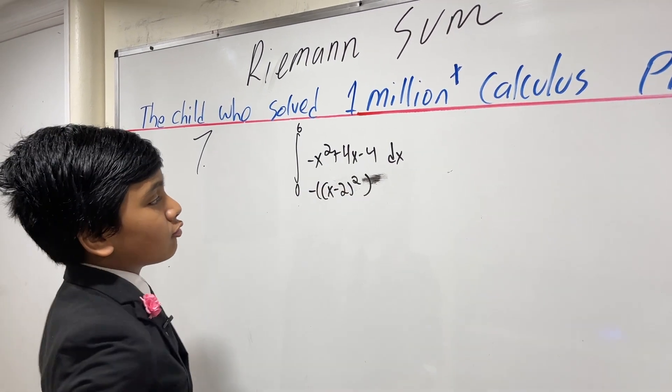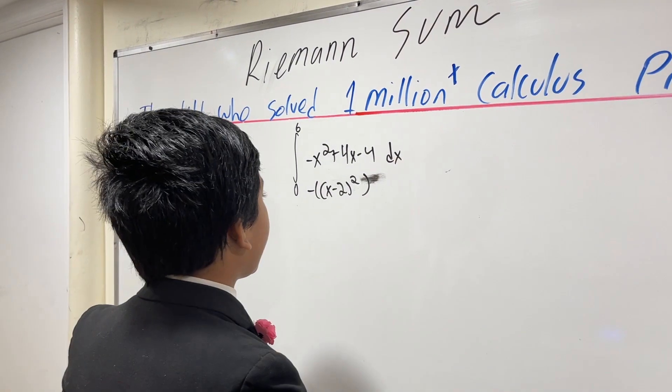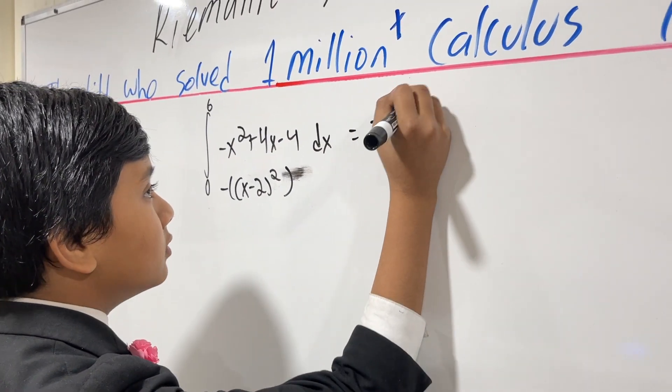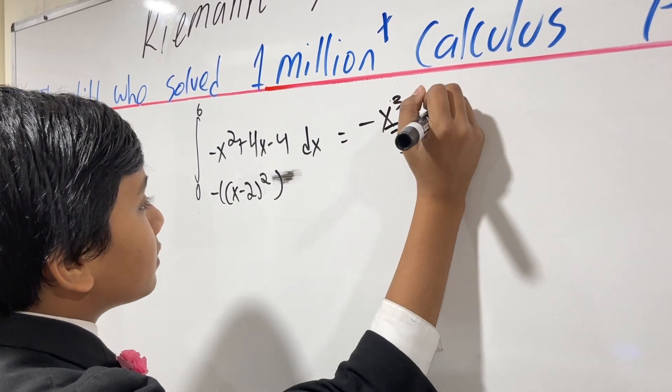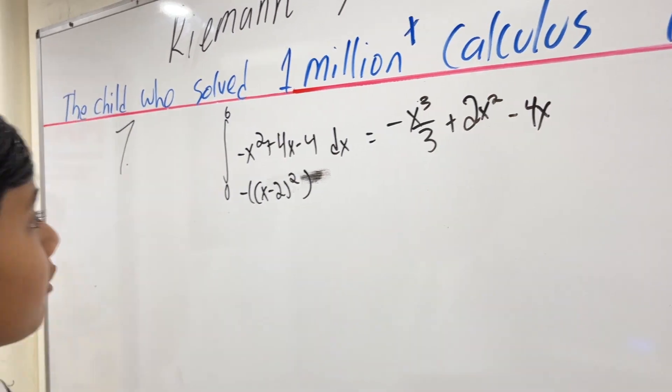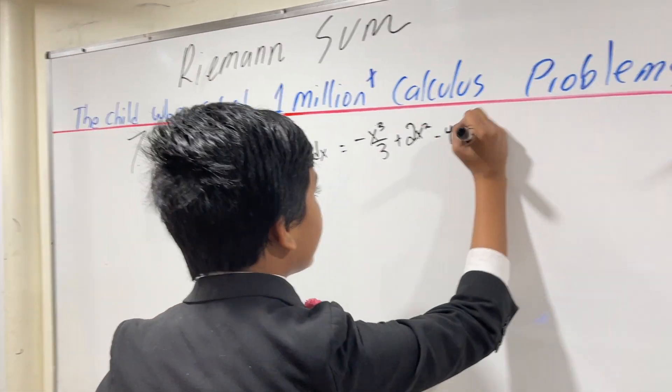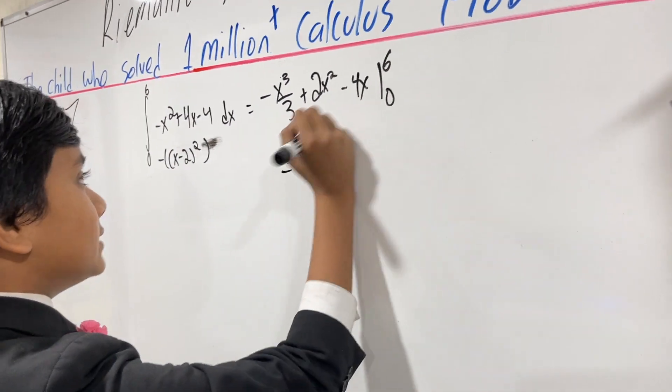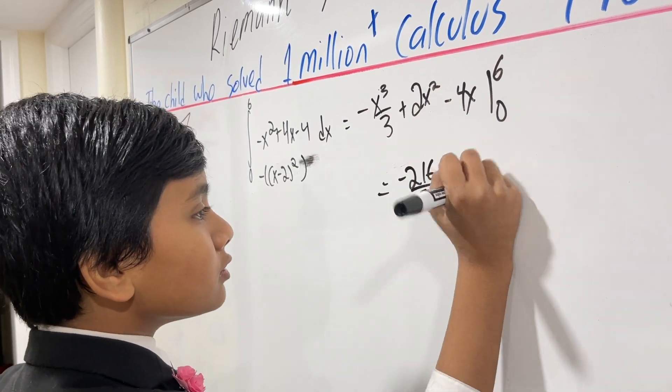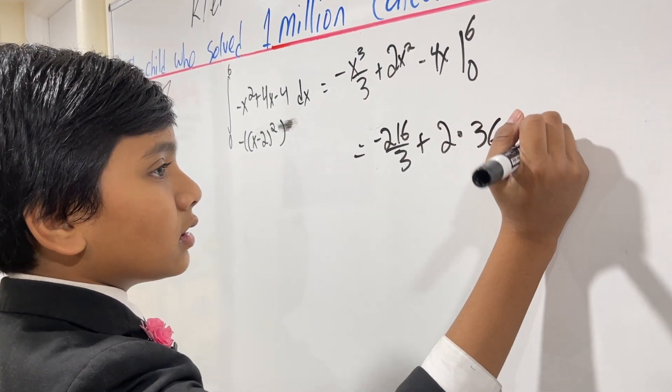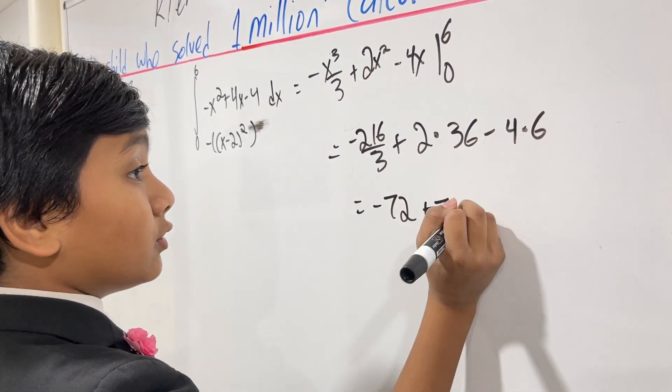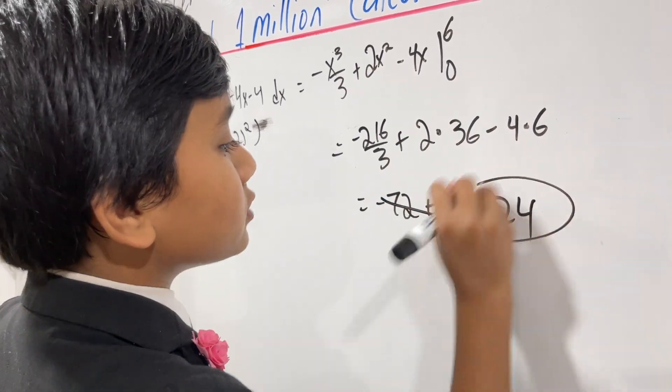First of all, let's try and calculate this real integral. Let's see what it gives us. So calculating that real integral, we get minus x cubed over 3 plus 2x squared minus 4x. Now obviously if we plug 0 in here, we get 0. So all we've got to do is plug in 6, and we get minus 216 over 3 plus 2 times 36 minus 4 times 6. So we have minus 72 plus 72 minus 24, which means that the answer is minus 24.